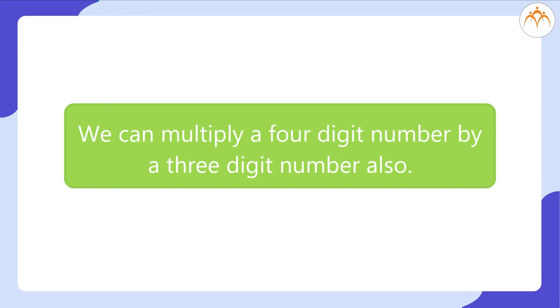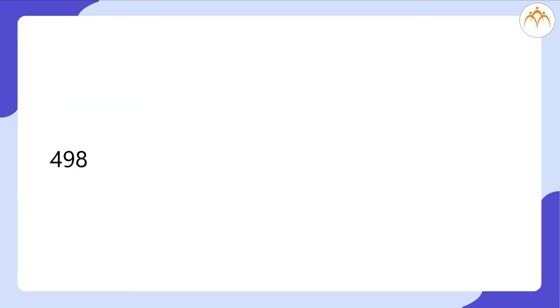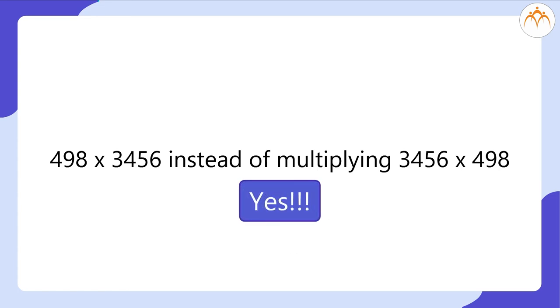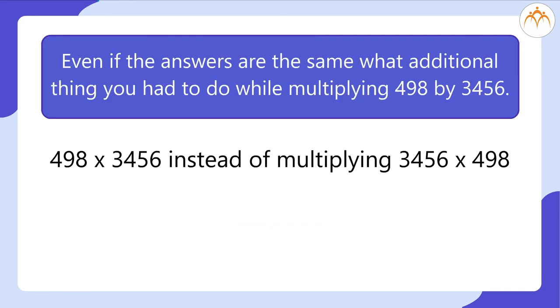Similarly, we can multiply a four-digit number by a three-digit number also. What if we multiply 498 by 3,456 instead of multiplying 3,456 by 498? Will they have the same answer? Yes, they will. Just try it out and let us know — even if the answers are the same, what additional thing you had to do while multiplying 498 by 3,456?